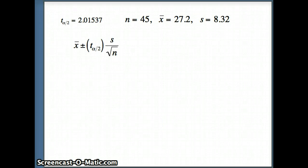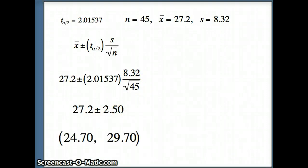So again, there's our relevant data. x bar will be 27.2, t alpha by 2, 2.01537, s, 8.32, and n, 45. So we see that, plugging those in, and then doing our computation. 2.01537 times 8.32 divided by root 45 will give me 27.2 plus or minus 2.50. And we get a confidence interval of 24.7 to 29.7.